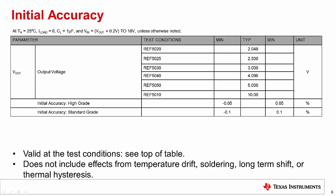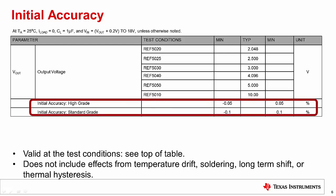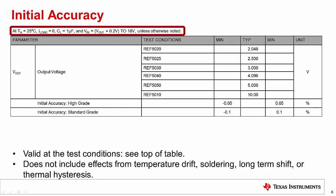Initial accuracy is the error in the specified output voltage of the reference. The error is only valid under the specific set of test conditions that the initial error is defined for. In this example, the initial accuracy is defined by the test conditions at the top of the page: ambient temperature of 25 degrees Celsius, current load at 0 amperes, load capacitance at 1 microfarad, and input voltage at the output voltage plus 0.2 volts to 18 volts, unless otherwise noted.